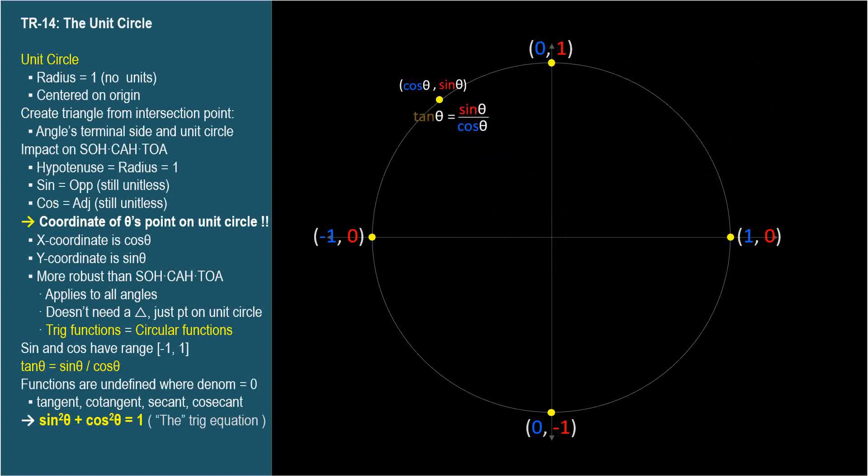A function that equals a fraction is undefined when the fraction's denominator is zero. So the tangent is undefined where the cosine is zero, which is all angles at the top and bottom of the unit circle. The cotangent, being the reciprocal of tangent, is undefined when the sine is zero, which is all angles at the left and right edge of the unit circle.